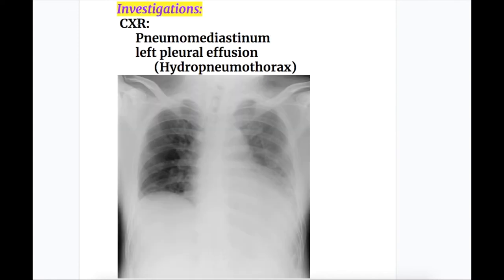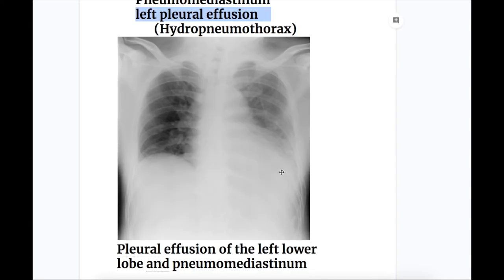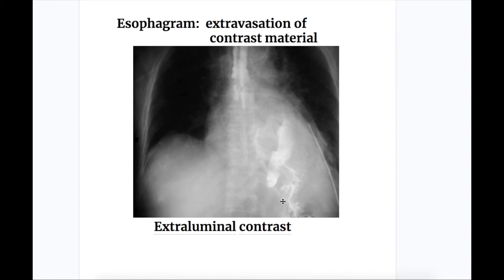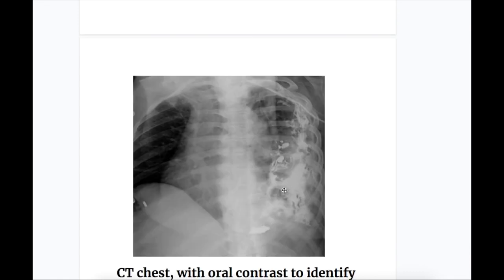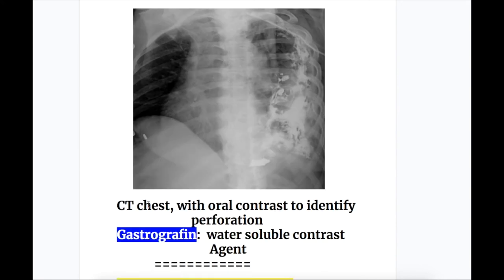Amongst the investigations, X-ray chest shows pneumomediastinum and left pleural effusion, and hydropneumothorax. There is pleural effusion of the left lower lobe and pneumomediastinum. Esophagram shows extravasation of contrast material — extraluminal contrast visible on X-ray. CT chest with oral contrast is used to identify perforation, and the oral contrast material used is gastrografin, which is a water-soluble contrast agent.